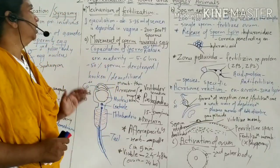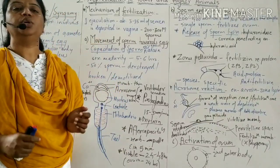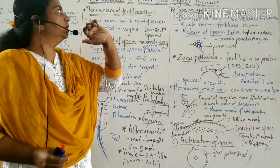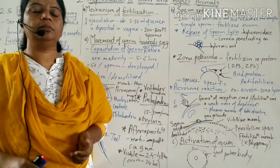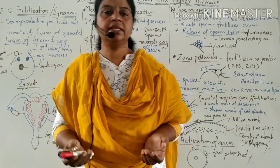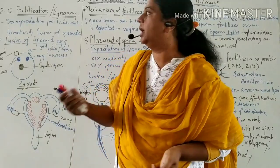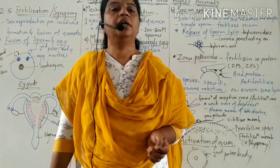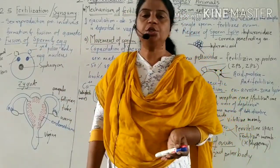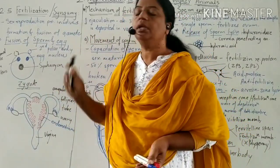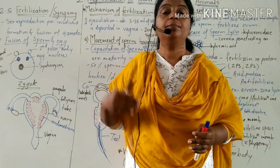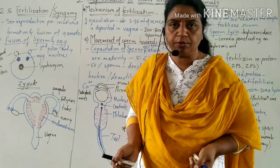Hello students. We will start the new topic of the second chapter: reproduction in lower and higher animals. In the last lecture, we covered spermatogenesis and oogenesis. Here we will see fertilization, which is also called syngamy. In sexual reproduction, the primary process involves formation and fusion of gametes, and fertilization is the later process.